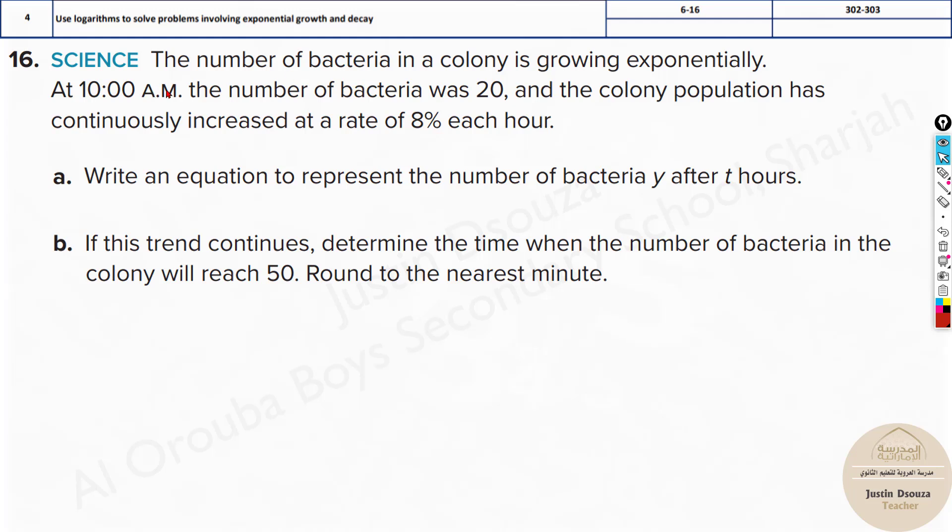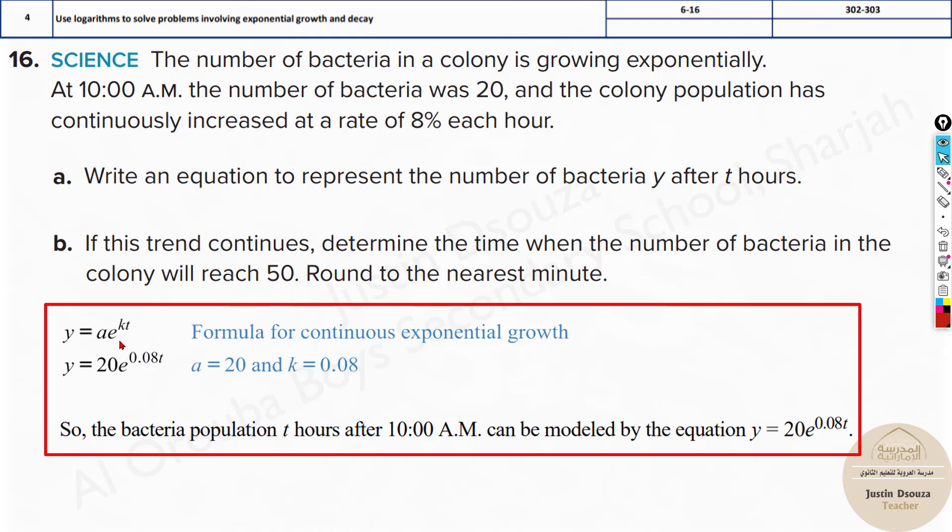Again, it's a similar thing. They have told at 10 a.m. the number of bacteria is 20, and the colony population has continuously increased at the rate 8%. We need to write an equation: y equals a times e to the power kt, the same formula. Then substitute what is known. We know initial population a is 20. K value is 0.08 or 8%. This is the equation. We don't know time, it changes, and we will get any new population based on the time from 10 a.m. onwards.